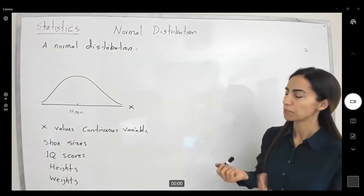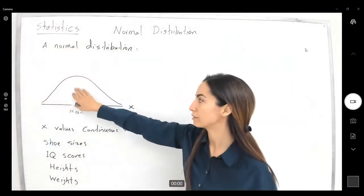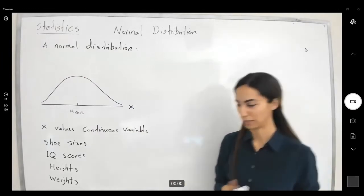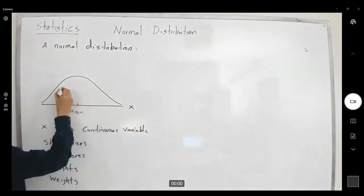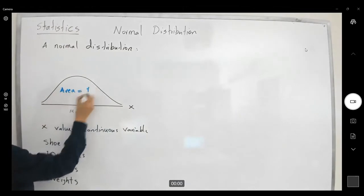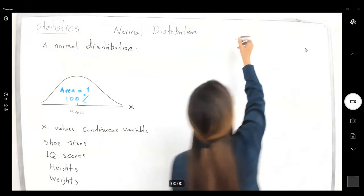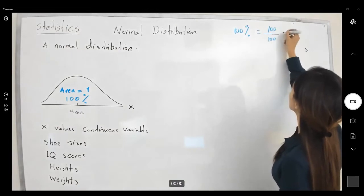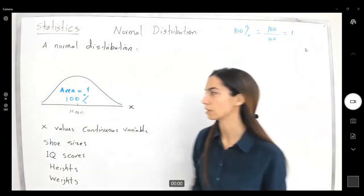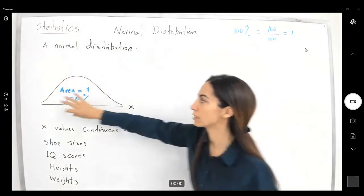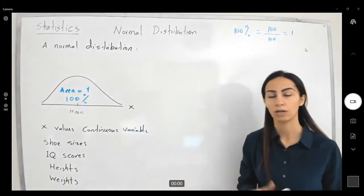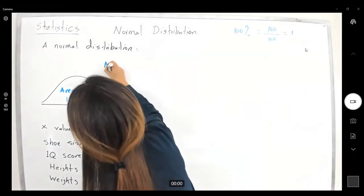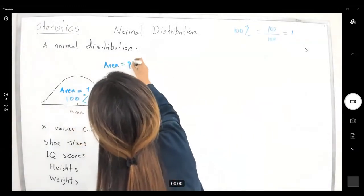Remember that the graph has area below it. The area below the graph is 100% or 1. Remember that 100% is 100 divided by 100, which is 1. When you're talking about the area, you're talking about the probability.